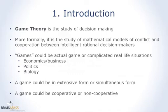A game could be in extensive form or simultaneous form. In an extensive form game, one player goes first and the other player follows — they take turns. Chess, for example, might be an extensive form game: the white pieces move first, then the black pieces, then white again. That's extensive form games.